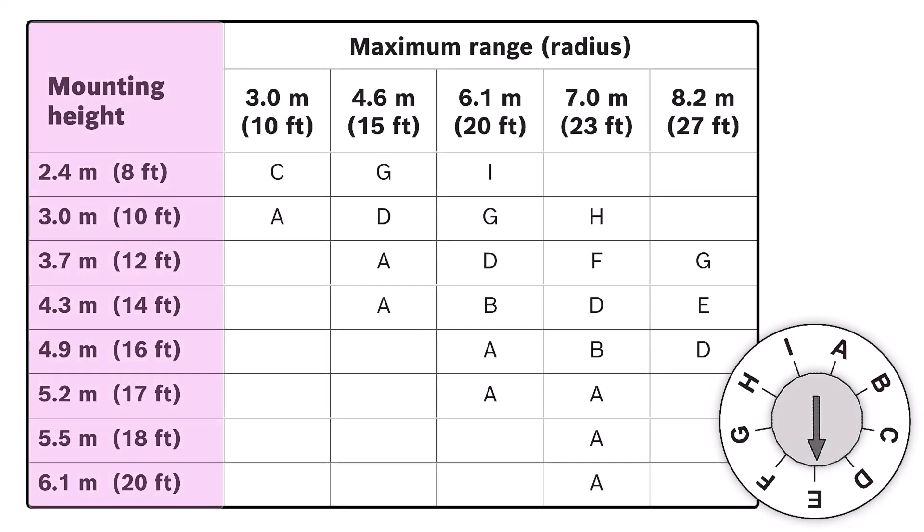Mounting height is listed as the rows. The maximum range, or radius, is listed as the columns. The range is the distance from the detector to the outside edge of the coverage pattern.